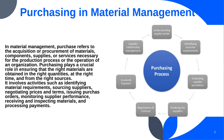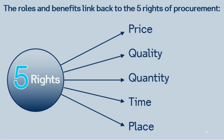An important concept in this chapter is the five Rs of purchasing in material management, which encapsulate the key principles essential for effective procurement practices. They include obtaining the right quality of materials at the right price, from the right source, at the right time, and in the right quantity. The right quality emphasizes the importance of procuring materials that meet specified standards and contribute to product integrity.